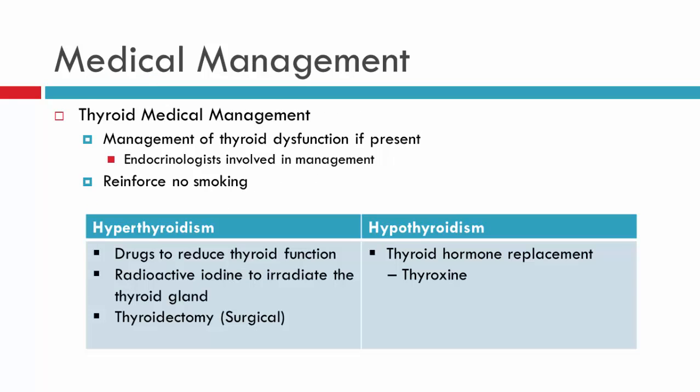Let's start off with the medical management of a patient with thyroid dysfunction. Depending on whether they're hyperthyroid or hypothyroid, management will differ. Remember, most of the patients with thyroid eye disease will be hyperthyroid. Irrespective of what type of thyroid dysfunction the patient has, the endocrinologist and you as the orthoptist and the ophthalmologist will be reinforcing with the patient that they must stop smoking if they are a smoker.